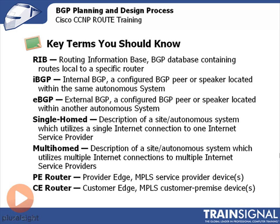Just some key terms we want to review. The RIB, or Routing Information Base, is essentially the BGP database containing all routes to destination networks, local to a specific BGP router.